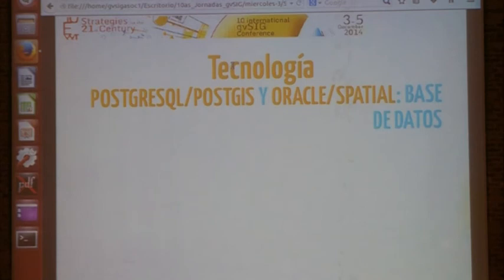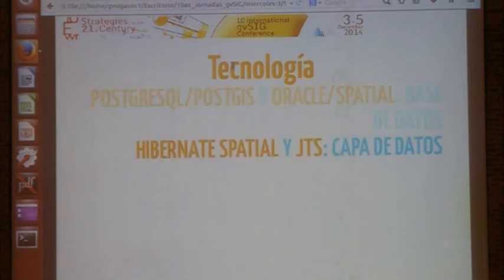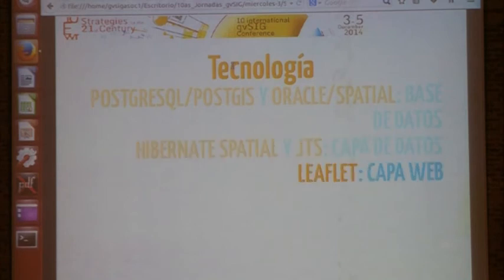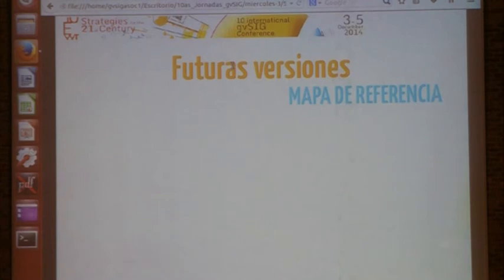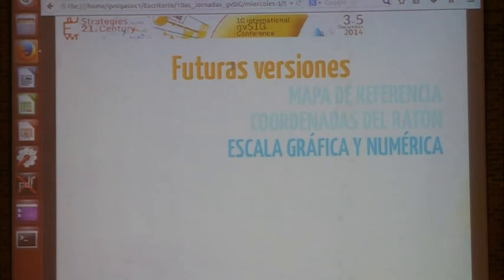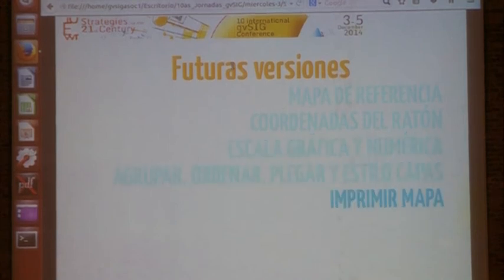Technologically speaking, we use PostgreSQL, PostGIS, and Oracle and Oracle Spatial. For data, we use Hibernate Spatial and JTS. As for future versions, we will also include a reference map with a full view regardless of the zoom, and we will be able to see the coordinates of the mouse. We will include a graphic and numerical scale depending on the zoom applied on the map, a number of improvements about the layers, and the map will be printable.